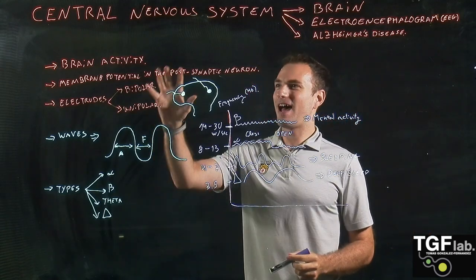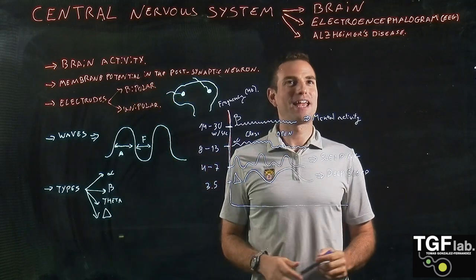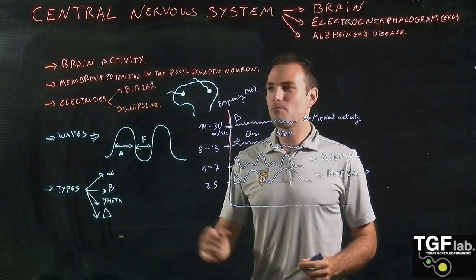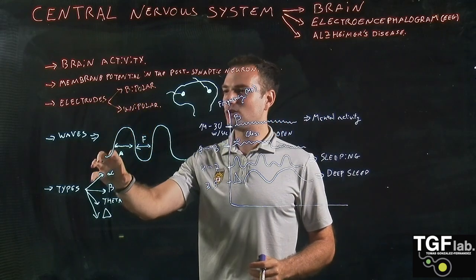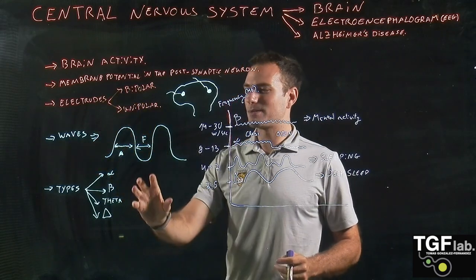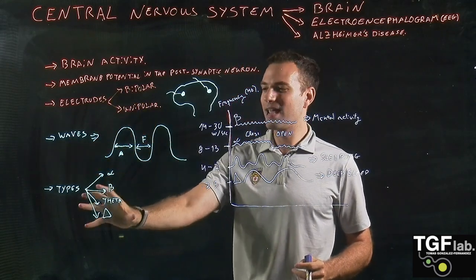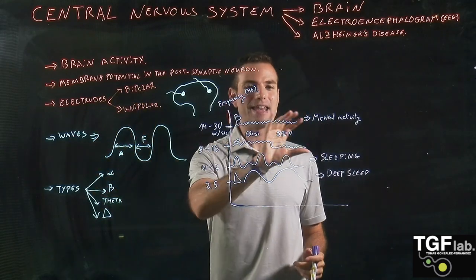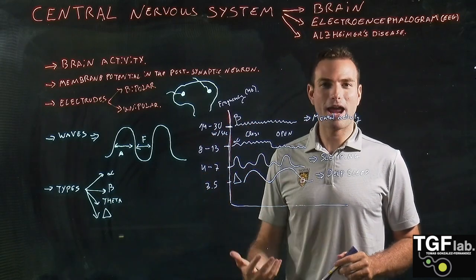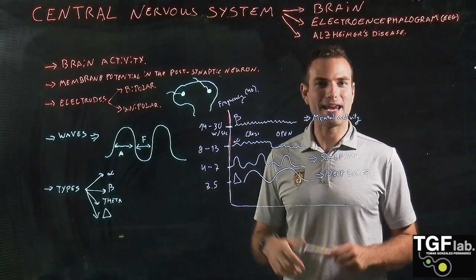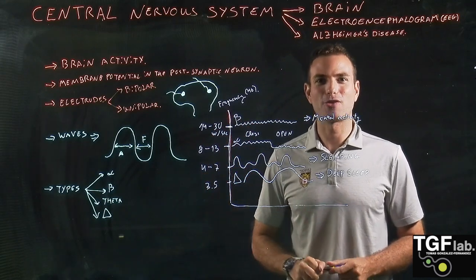So we have looked at the basics of the electroencephalogram: the electrodes, the different types of waves, and what we are measuring — the beta, alpha, theta, and delta waves — and what they mean and what processes we can record through them.